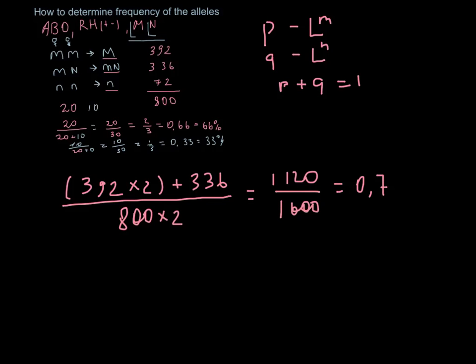So what we get is 1120 over 1600, and that is 0.7. And as I already shown in this formula, that p plus q is 1,